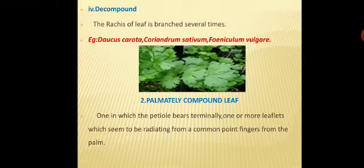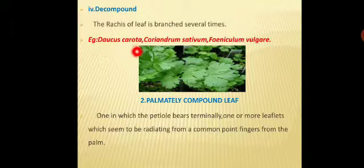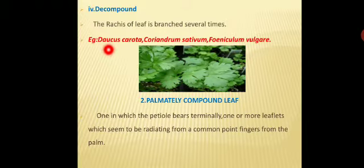Next is decompound. In decompound leaves, there are several leaflets attached with one another and no regular surface — the rachis of the leaf is branched several times. Examples include Daucus carota (carrot), Coriandrum sativum (coriander/kothamali), and Foeniculum vulgare. These are some examples of decompound leaves.